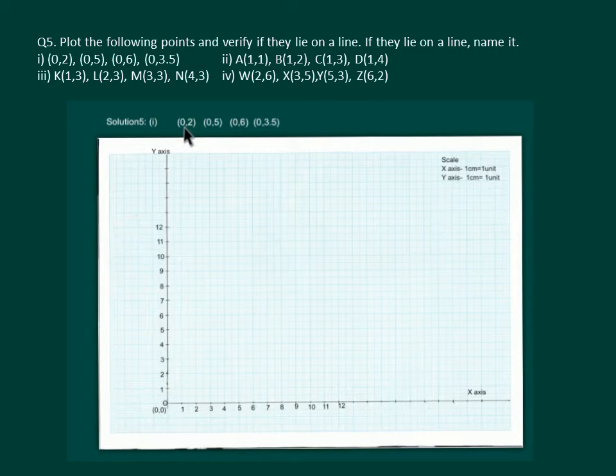We have to plot (0,2) that means 0 on the x-axis and 2 on the y-axis. Hence, we have the point (0,2). Next, we have to mark (0,5) that means 0 on the x-axis and 5 on the y-axis. That is, we have (0,5).